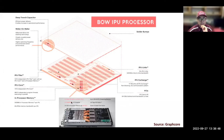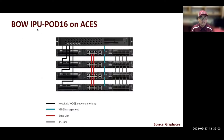The IPU compute unit is called a BOW IPU machine. On our ACES system, we have a POD-16 system, meaning 16 IPUs total. Each BOW IPU machine contains four IPUs, so four machines give us 16 IPUs linked together. This is the IPU system on our ACES platform.